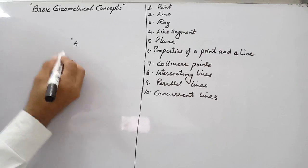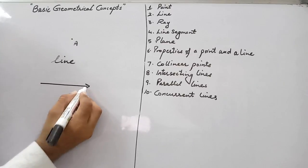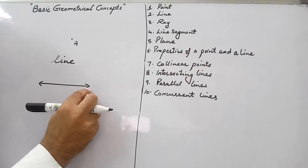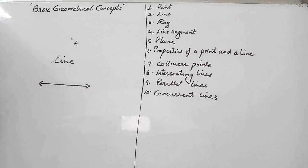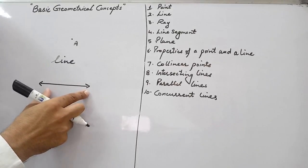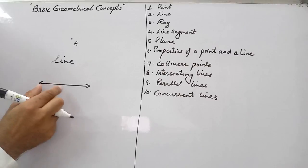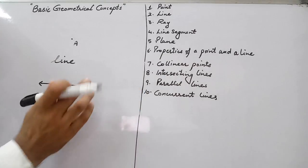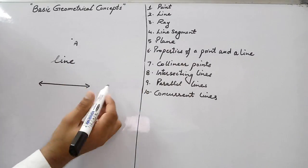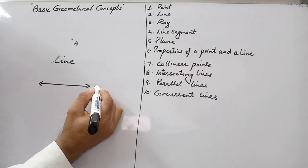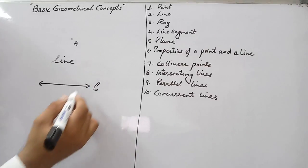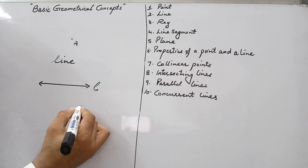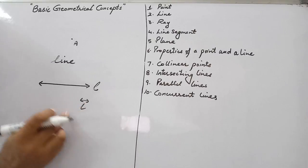Next is line. A line is a straight path which extends endlessly in both the directions. I can extend this line in this direction and in this direction also. There is no end point of a line — it is always moving. The name of a line can be written as a small letter like line L, line M, line N, etc. You can also write the symbol here. Line L or line M you can write this way.